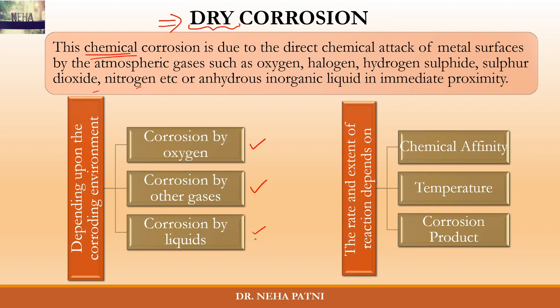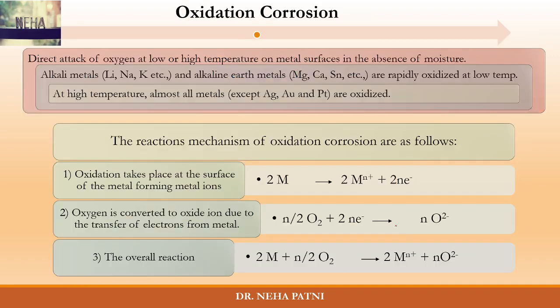The rate and extent of corrosion will depend on chemical affinity — that means how the metal and the gases are affiliated to each other, whether they have a reactive nature or not. Temperature also matters: if you increase the temperature, generally the rate of corrosion increases. The corrosion product formed after corrosion will decide whether further corrosion takes place or not.